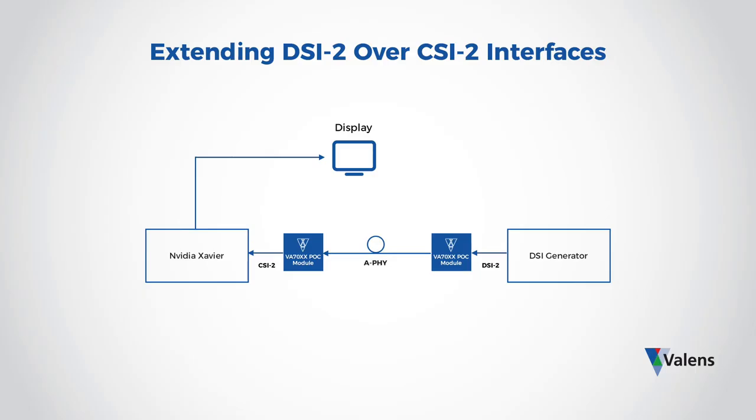We are happy to share this demo video showing the extension of DSI data from one ECU to another through native CSI interfaces using Valence chipsets that support the various requirements of the new MIPI AFI standard. As you can see in this diagram, we're going to be taking a DSI2 data stream and sending it through modules simulating the Valence VA7000 chipsets, where the data will be adapted into CSI2 format, then sent to the second ECU which will display it.